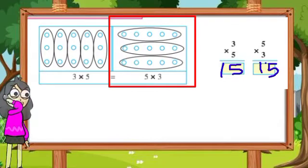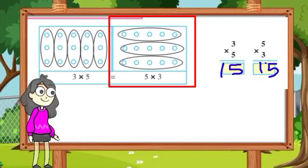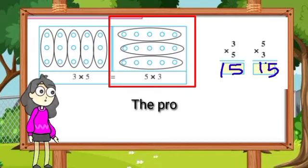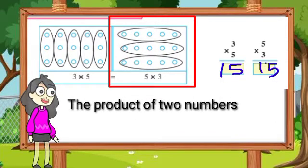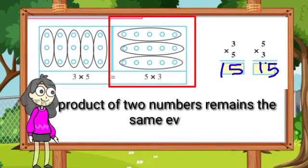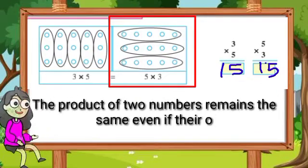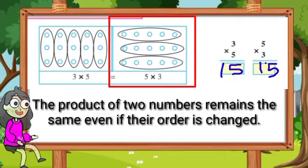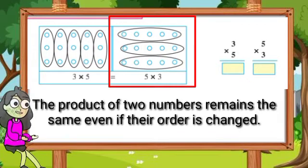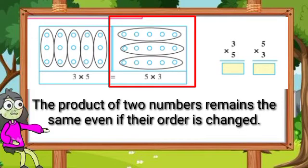Let's observe these examples. Ata ya donhi udaharancha nirikshan karuya. Apan teen gunile paach barobar 15 lihile aahe. Tyacha pramaane paach gunile teen - yacha hi uttar pandhra lihile aahe. The product of two numbers remains the same even if their order is changed. Manjech sankhyaancha kram badallar tari gunakar toch yet-to. Lakshat theva - sankhyaancha kram jari badallar tari gunakar maatra toch yenar aahe.